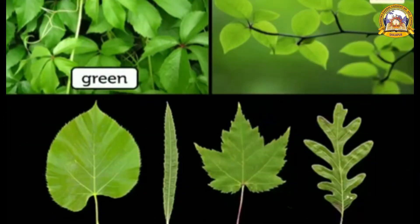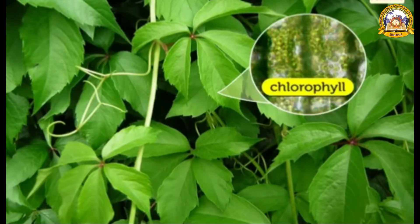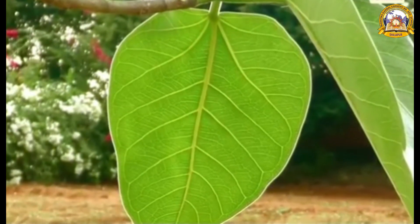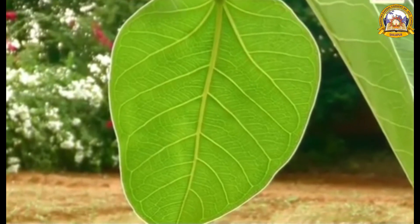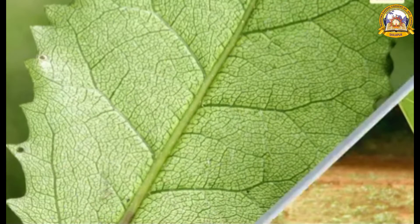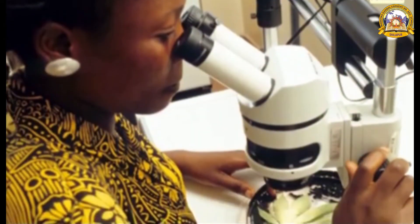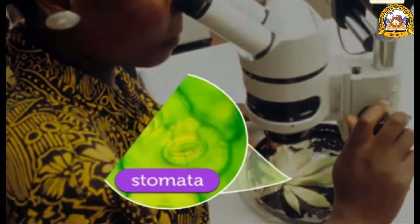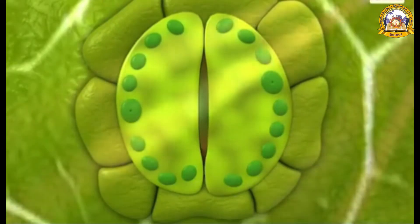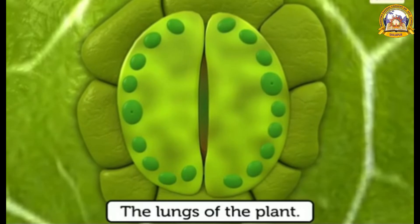Most leaves are green, thin and flat. The green colour of the leaf is due to the presence of a substance called chlorophyll. The leaves are flat and thin so they can trap as much sunlight as possible. If they were thick, all the cells wouldn't be able to get much sunlight or carbon dioxide. The midrib and veinlets keep the leaf firm and exposed to the sun. If we observe a leaf section under a microscope, we will find small pores on the undersurface of the leaf. These pores are called stomata. The stomata help to absorb gases from the air and also give out gases. We can also call the leaves the lungs of the plant.